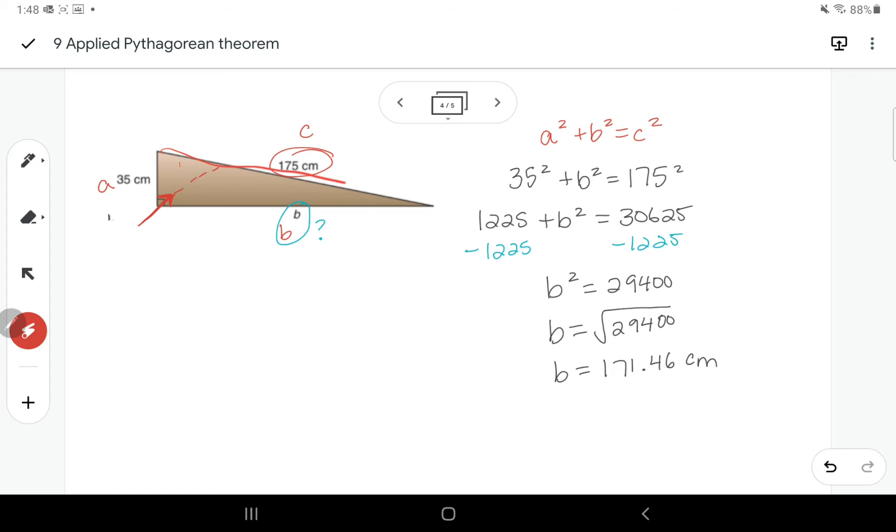And this is 171.46, and that's in centimeters. Make sure you have your units. It always makes sense to look back at the question. This hypotenuse was 175, so that's quite long. And this one looks almost as long, and it's 171. So that seems to make sense.